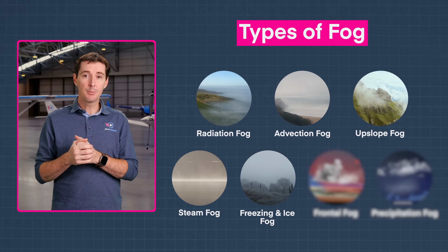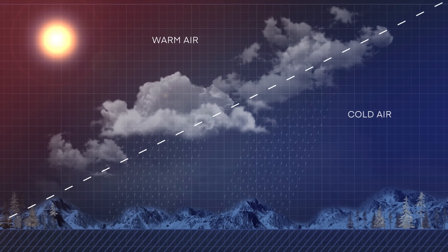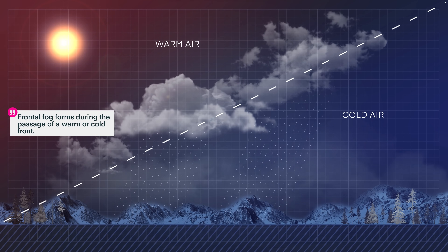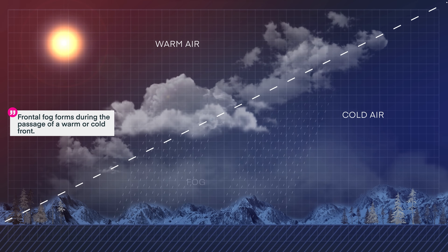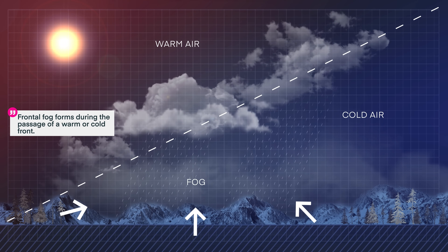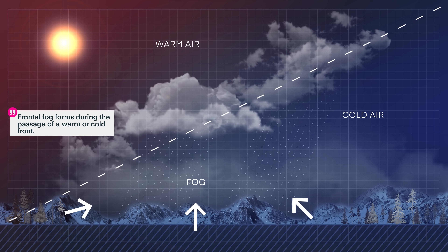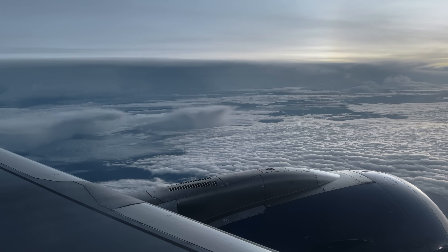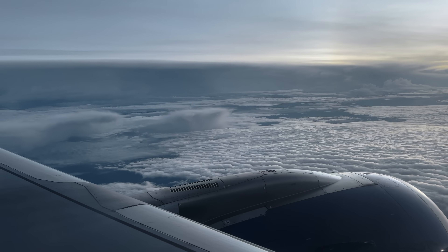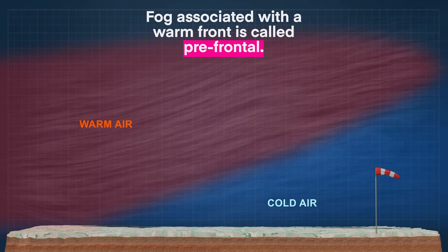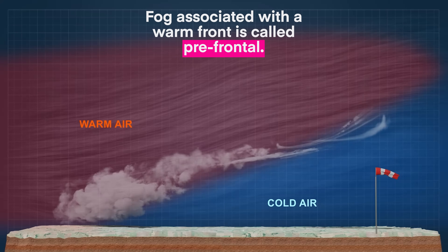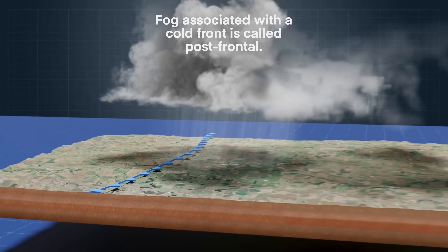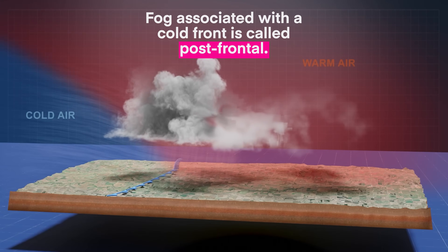The second to last type of fog is called frontal fog. Frontal fog forms during a warm or cold front passage. The warmer rain that falls into the colder air evaporates, causing the dew point to rise and leading to air saturation. The fog associated with a warm front is called prefrontal, and the fog associated with a cold front is called postfrontal. Frontal fog usually dissipates right after the front passes.